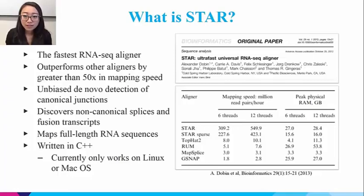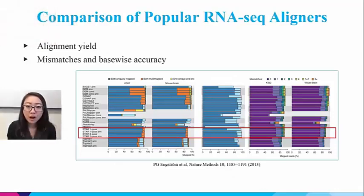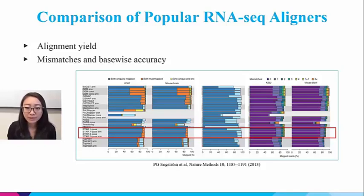My experience with STAR is that, depending on the reads, STAR is at least 20 times faster than TopHat, meaning that an overnight run with TopHat will be finished within an hour with STAR. STAR is written in C++ and currently only runs on Linux or macOS. One of the favorite activities of bioinformaticians is to compare the performance of different softwares. Several individual studies have compared the performance of STAR and other popular RNA-seq aligners, including GSNAP, JEM, and TopHat.